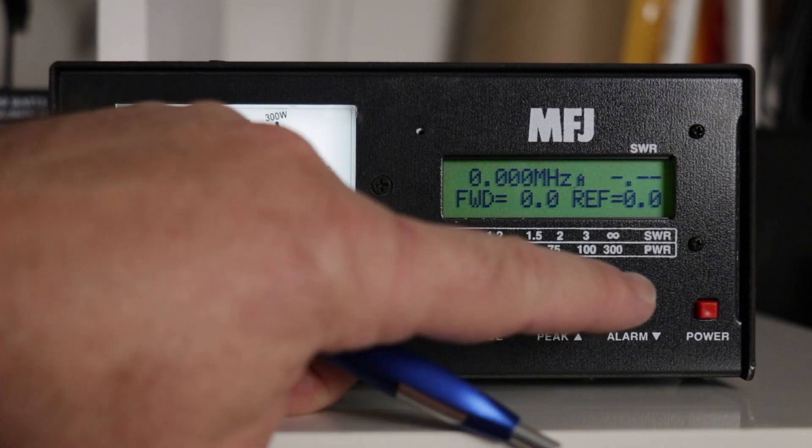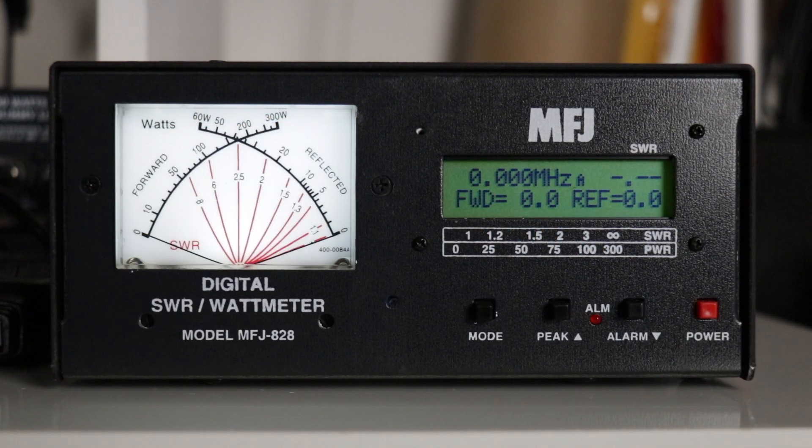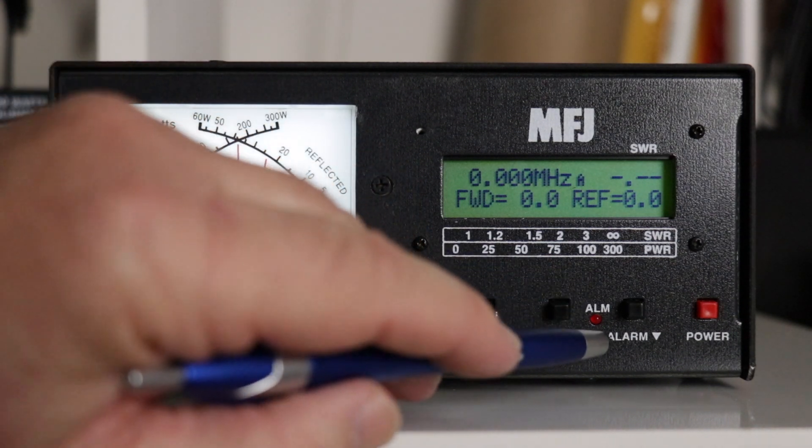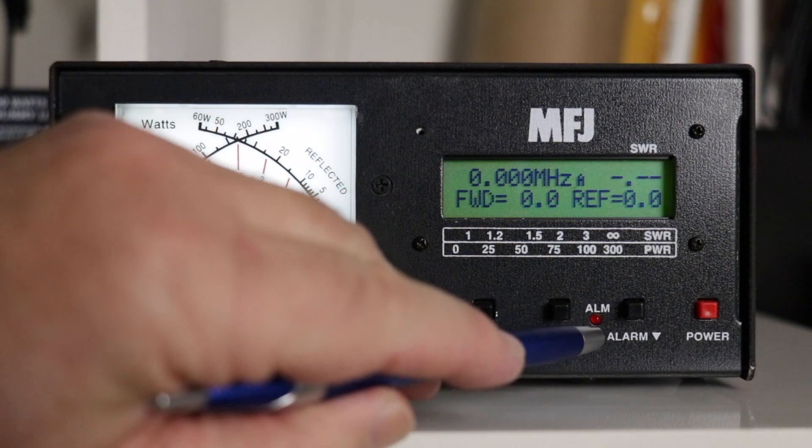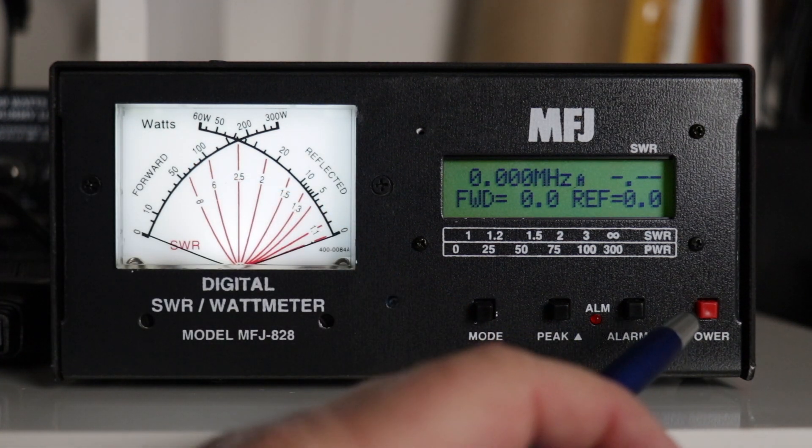Now the alarm button, when you push it, two beeps is off, one is on. And as you saw in the menu, I have my SWR alarm set for two. If it gets higher, the buzzer will sound and this light will come on. And then the last button, obviously power.